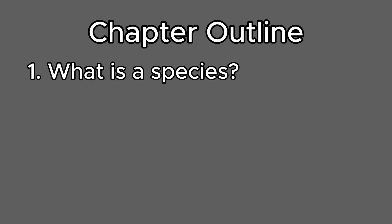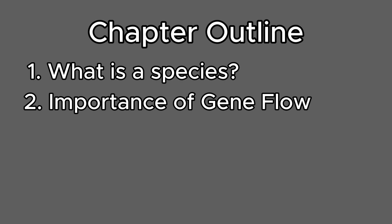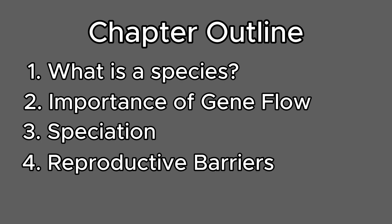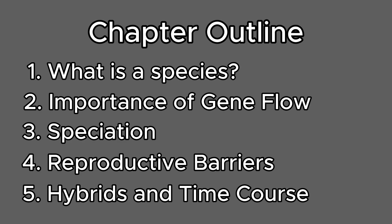Here is an outline of how we'll explore today's topic: 1. What is a species? 2. The importance of gene flow. 3. Speciation. 4. Reproductive barriers. And 5. Hybrid zones and the time course of speciation. Let's begin.